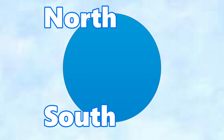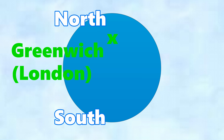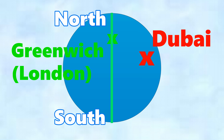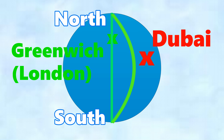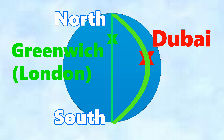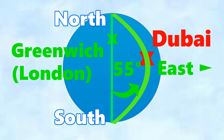Now let's look at longitude. We have the north pole and south pole; draw a line between the two passing through Greenwich — that's zero longitude, or the Greenwich meridian. Some people call it the prime meridian. To find the longitude of Dubai, we measure the angle from the centre of the Earth between Greenwich and Dubai, and we find it's 55 degrees east.